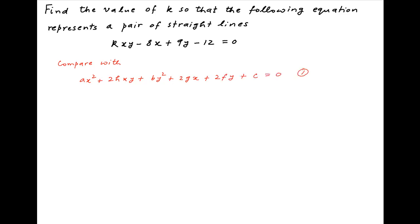Let's denote this by equation 1. Comparing equation 1 to the given equation, the coefficients of x² and y² are 0, therefore a is equal to b is equal to 0.